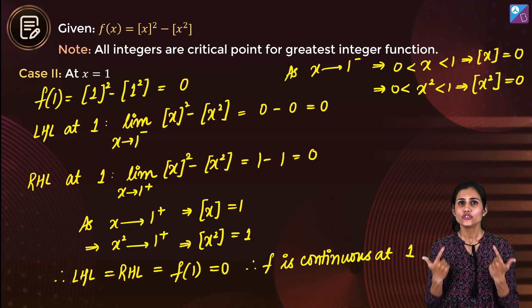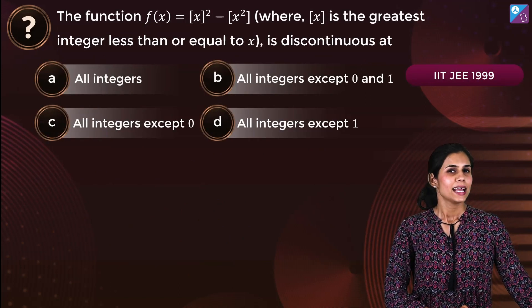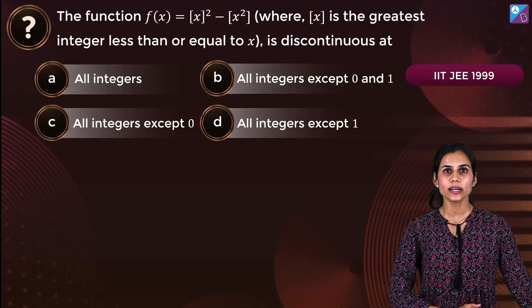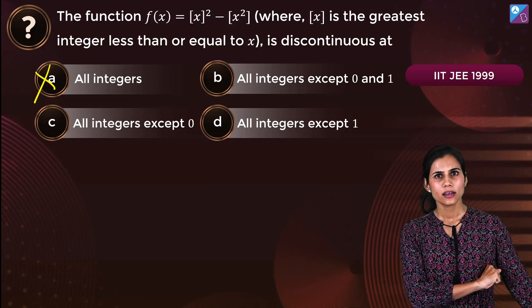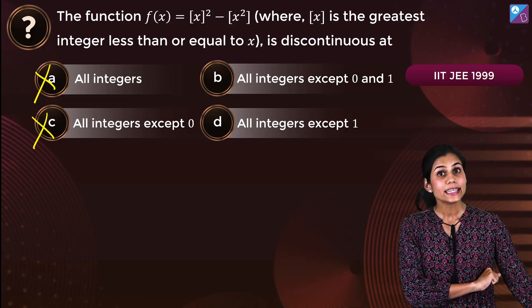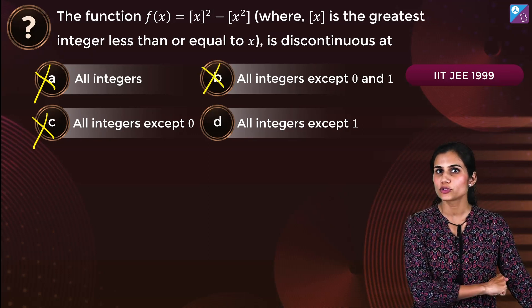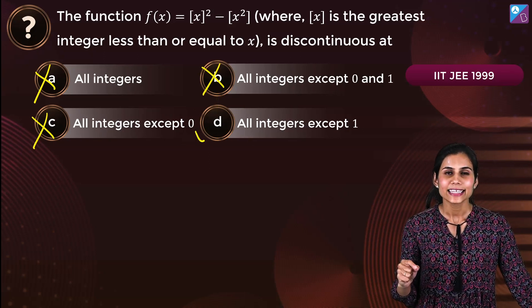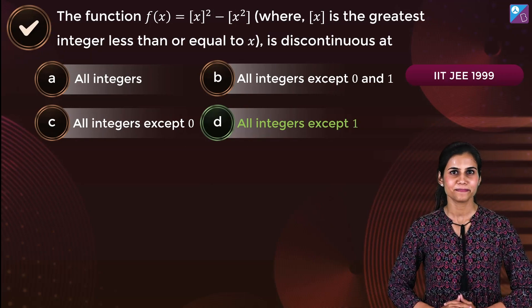Before checking continuity at any other input, go to the options. All integers — is the function discontinuous at all integers? No, it is continuous at 1, so option A is incorrect. All integers except 0 — this is also incorrect because the function is discontinuous at 0. All integers except 0 and 1 — even this is incorrect since the function is discontinuous at 0. That means you are left with only one option: all integers except 1. Yes, this is the correct answer. Your function turns out to be discontinuous at all integers except 1. Done.